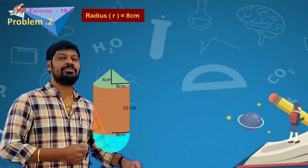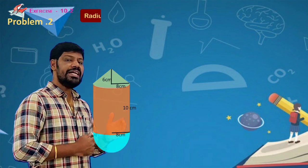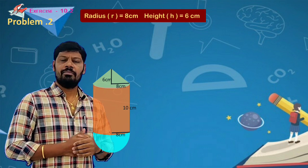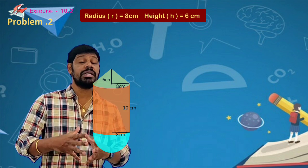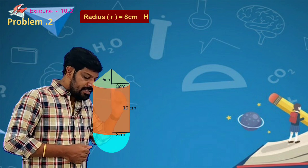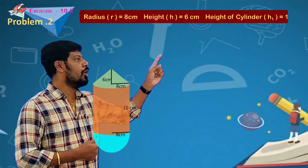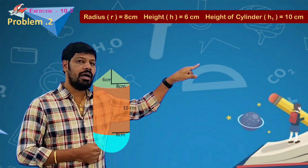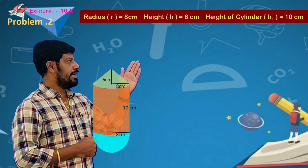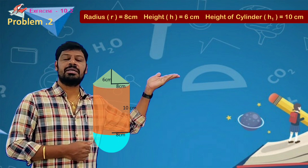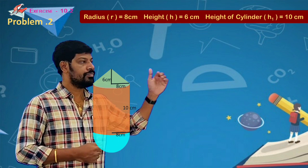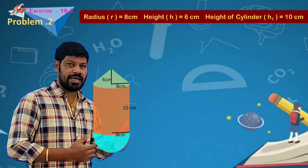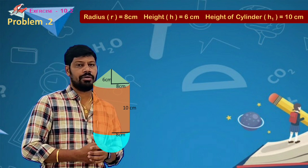The radius of all three objects is 8 cm. Now, the height of the cone is 6 cm. The height of the cylinder is 10 cm. So the radius is 8, the height of the cone is 6 cm, the height of the cylinder is 10 cm.